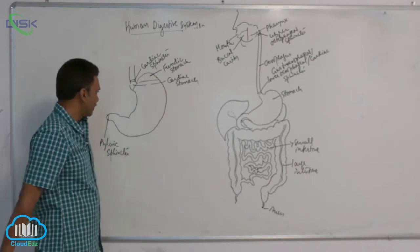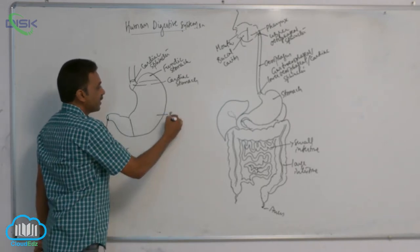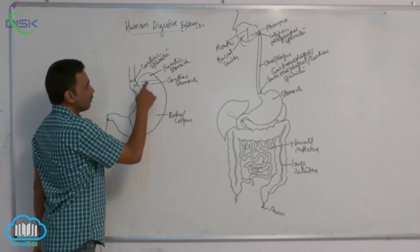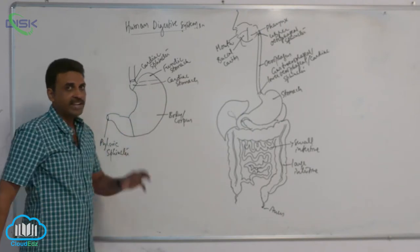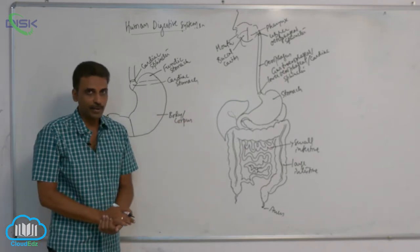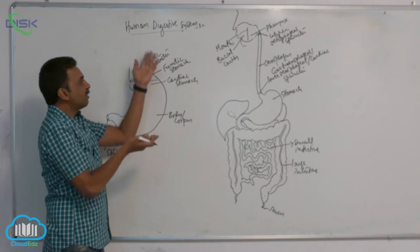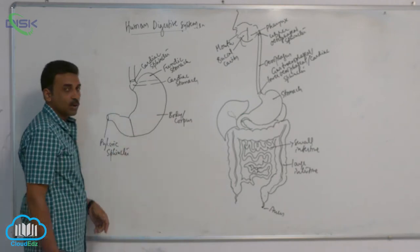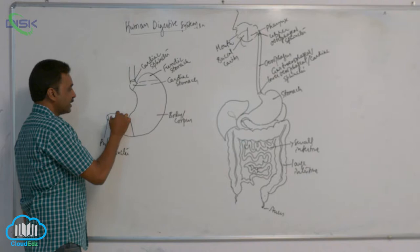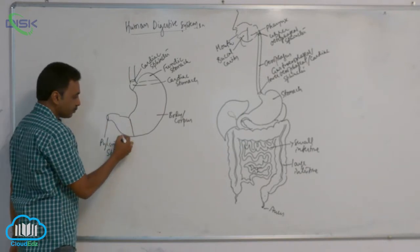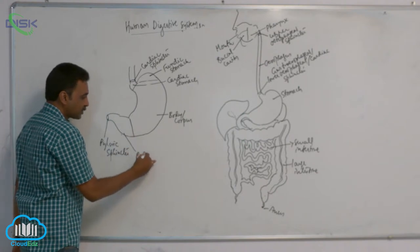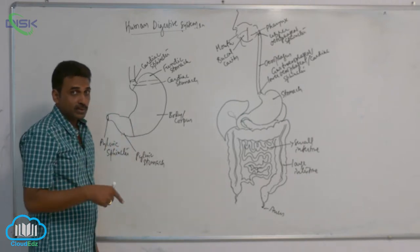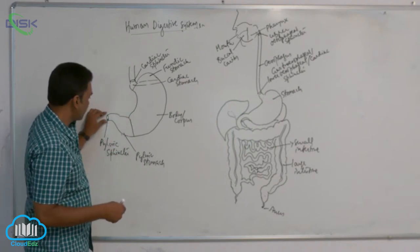That area is the fundic stomach. The large central area is called the body or corpus of the stomach — about 80% of the stomach is made up of the corpus. A small dome-shaped area above the opening is the fundic stomach, and at the beginning is a small cardiac stomach. The remaining part near the pylorus is called the pyloric stomach.